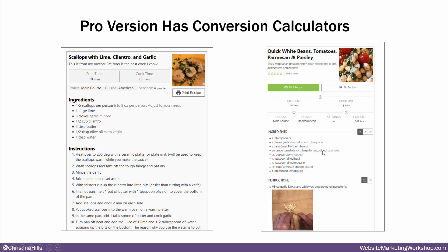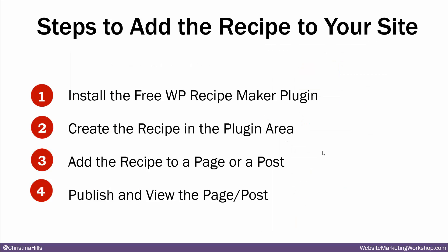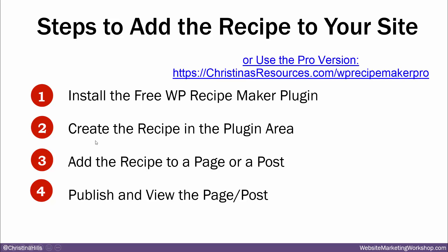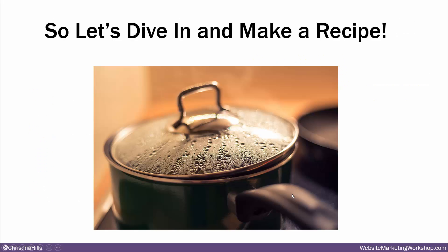This recipe screenshot is from the Food Sensitivity Kitchen website. Here are the steps to add a recipe to your website: first, install the free WP Recipe Maker plugin, or it could be the pro one; second, create the recipe in the plugin area; third, add the recipe to a page or a post; and fourth, publish and view the page or the post. I'm going to walk through these steps, so let's dive in and go ahead and make a recipe.